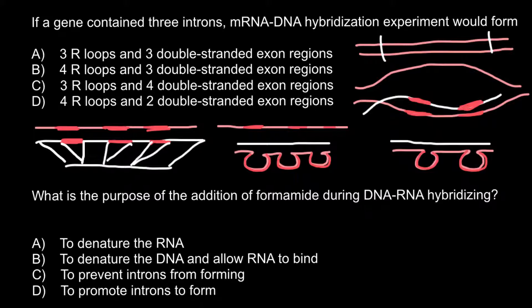As you can see, the correct answer is answer C: three loops and four double-stranded exon regions. By the way, a gene always starts with an exon and ends with an exon — it never starts or ends with an intron. Introns can only be found within a gene.